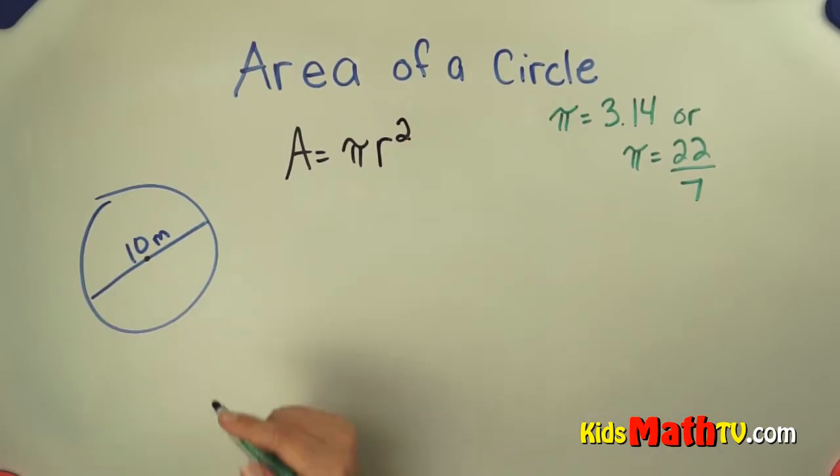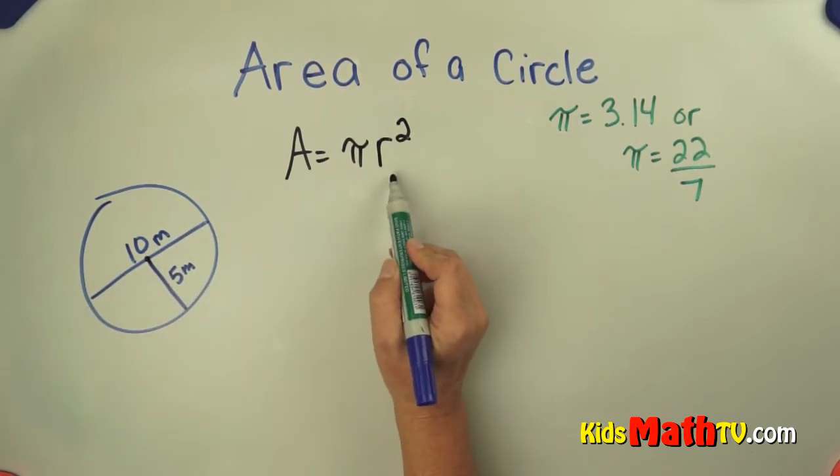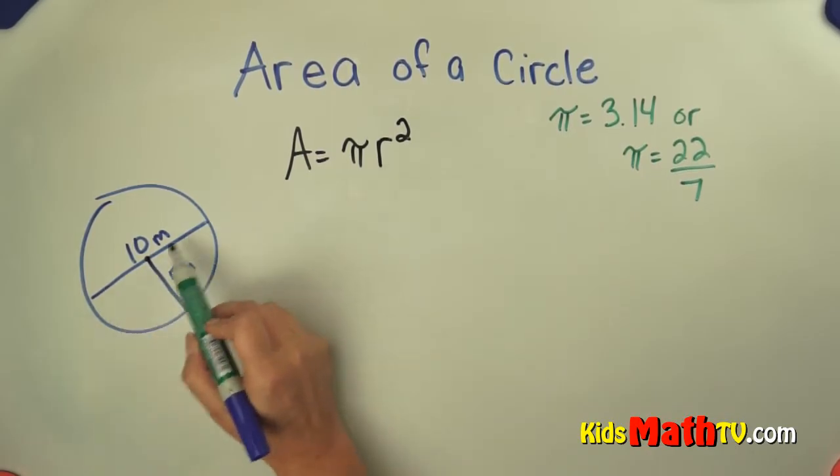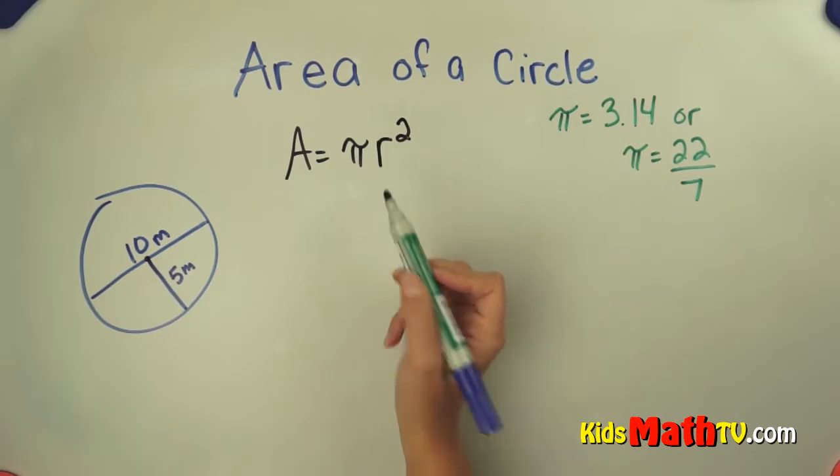Well the radius is actually half of the diameter. I've been given the diameter of 10 so the radius is 5 meters. I have to make sure I use the right number. If I use 10 it's going to give me the wrong answer because that's the diameter not the radius.